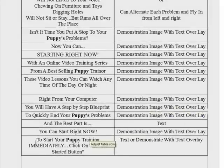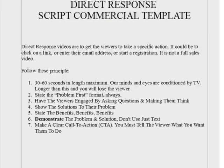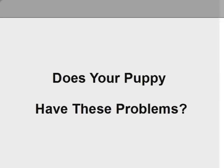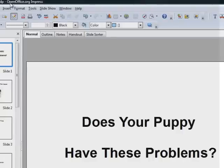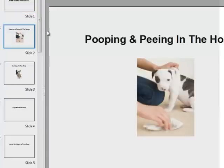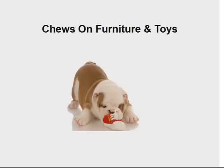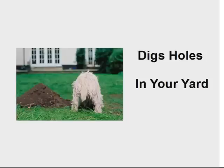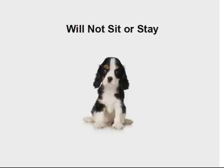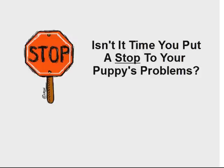At the end, I have a strong call to action and I say, 'To start your puppy training immediately, click on the Get Started button.' Now, all I did — and this is free — was open up my Impress slide presentation software. This is OpenOffice.org slide presentation software, it's free. I created a number of slides: here's a second one, here's a third one. Barking all the time — I got images of a dog barking, aggressive behavior, jumps on the front door, chews on furniture, digs in your yard, and won't sit or stay. Then I say, 'Stop — isn't it time to put a stop to your puppy's problems?'